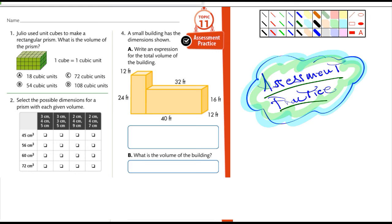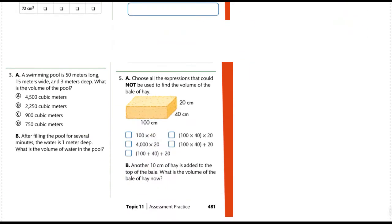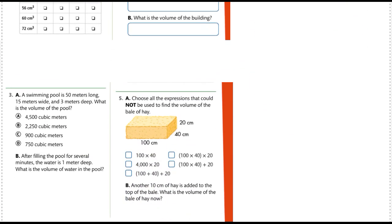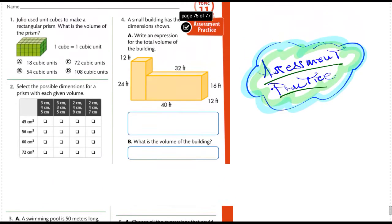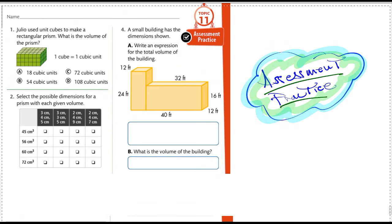I had to cut this up into a couple different pieces. Three is right there. A swimming pool is 50 meters long, 15 meters wide, and 3 meters deep. What's the volume of the pool? You could do that. And part B: after filling the pool for several minutes, the water is 1 meter deep. What's the volume of the pool?